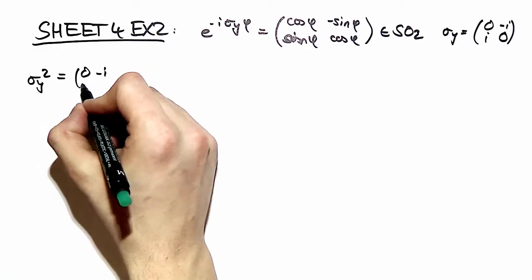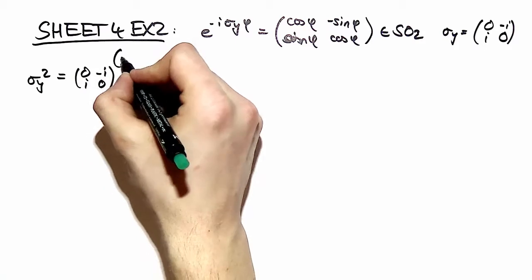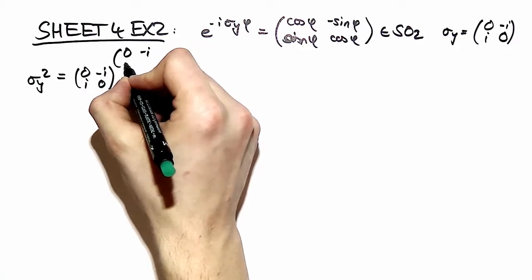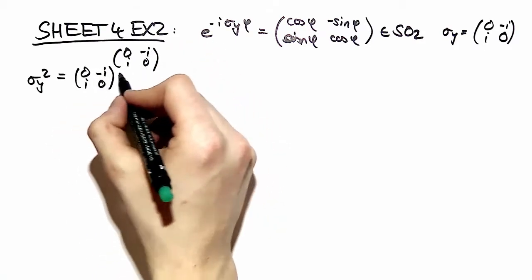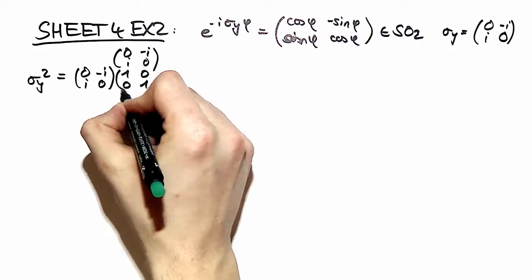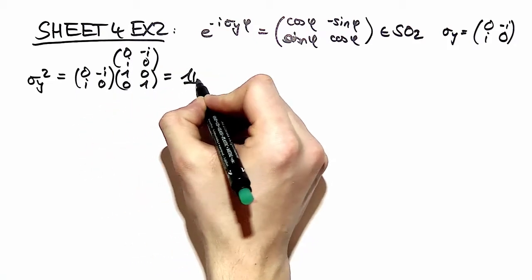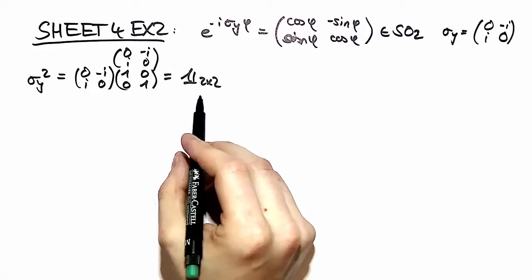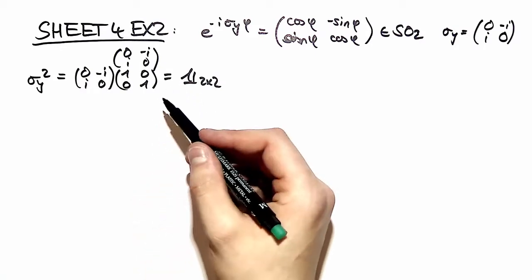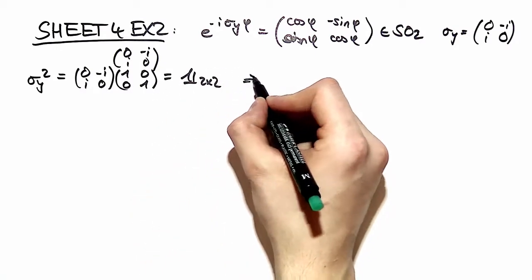So here we have sigma y and we multiply by sigma y again and here we have one zero zero one. So we observe that this is the identity matrix and this observation is very crucial for our calculation.